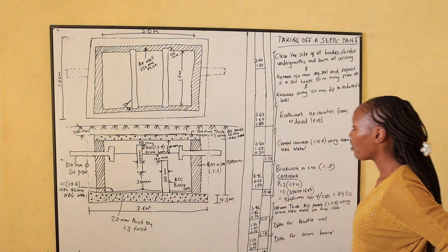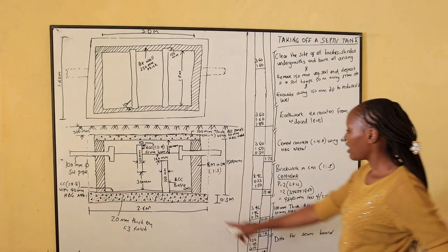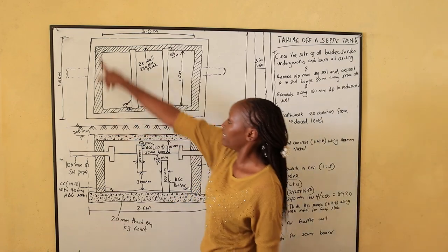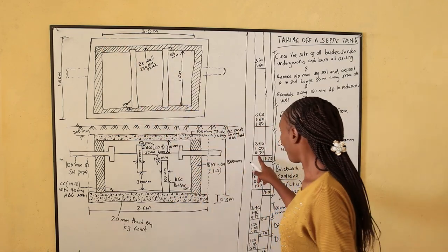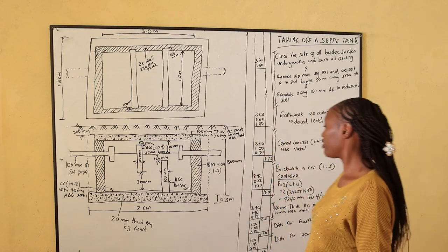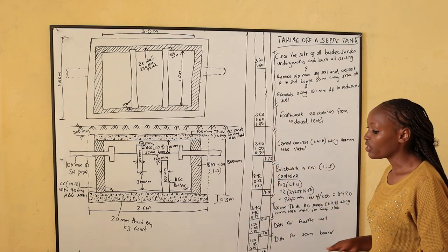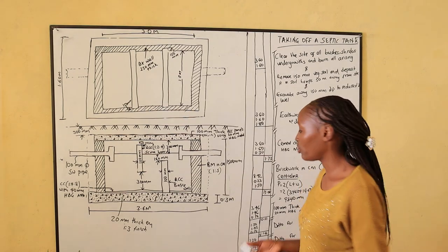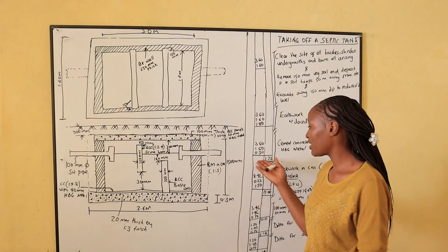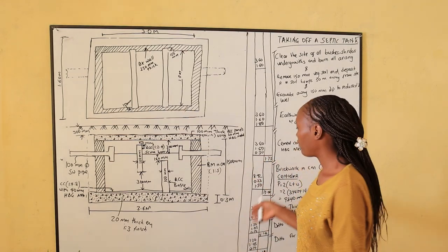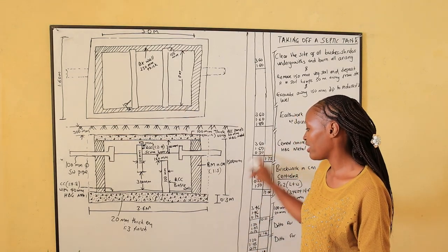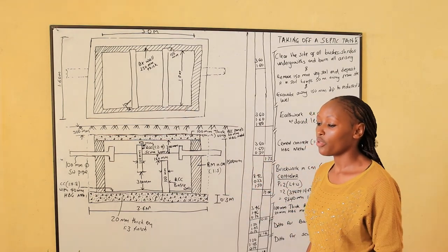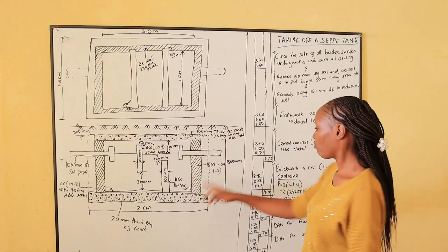We continue to the concrete floor slab. The length is 3.6, the width is 1.6, and the thickness of the concrete is 300mm, which is 0.3m. Whenever we are measuring concrete that is 300mm, you can take it off in square meters or cubic meters. Using cubic meters: length by width by thickness gives us 1.73 cubic meters as the concrete for the floor.